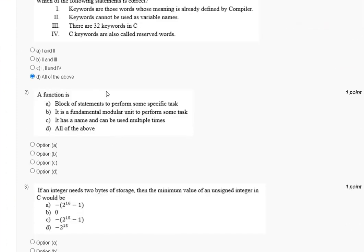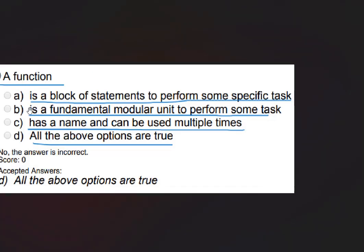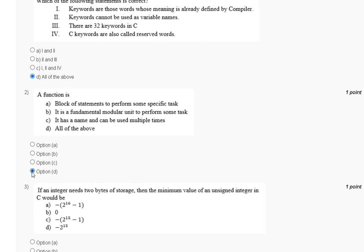Question 2: a function is a block of statements to perform some specific task; it is a fundamental modular unit needed to perform some task; it has a name and can be used multiple times; or all of the above. The explanation is that a function satisfies all of these properties, so the correct answer for question 2 is option D: all of the above.